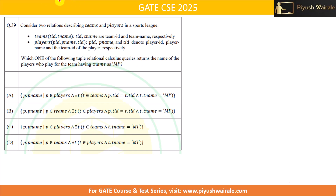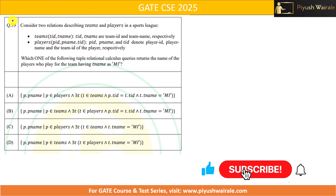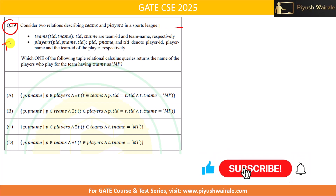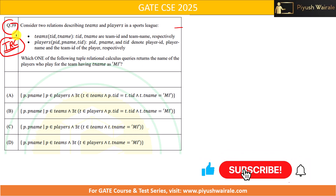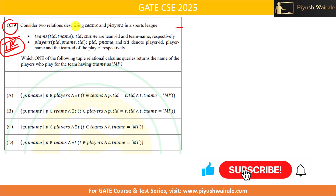In this video we are going to discuss question number 39 of GATE CEC 25. This question is based on Tuple Relational Calculus (TRC). This is the only question asked from this particular topic in the last five years. You can expect this type of question in GATE IDA exam as well since this topic is in our syllabus. Let's try to solve it: consider two relations describing teams and players.